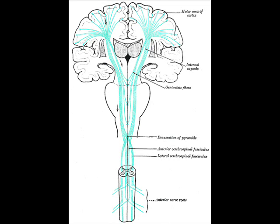It consists of axonal fibers that run between the cerebral cortex and the pyramids of the medulla. The superior parts of both the anterior and posterior limbs and the genu of the internal capsule are supplied by the lenticulostriate arteries, which are branches off of the M1 segment of the middle cerebral artery.